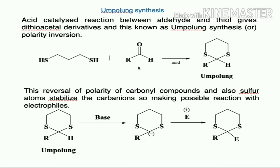In umpolung synthesis, the reaction of an aldehyde with a thiol gives a dithioacetal. Before umpolung, the carbonyl carbon is electrophilic. After forming the dithioacetal, there is a reversal of polarity — the carbon is no longer electrophilic but now acts as a nucleophile. This is why it is called polarity inversion. The sulfur atom stabilizes the carbanion, making possible reaction with electrophiles.